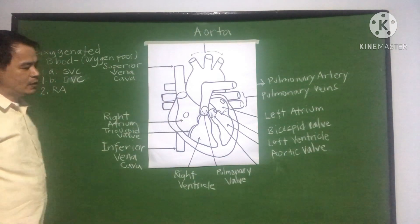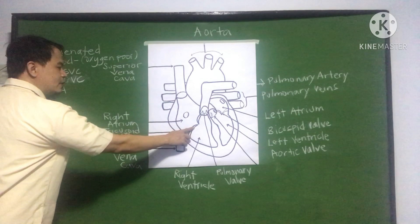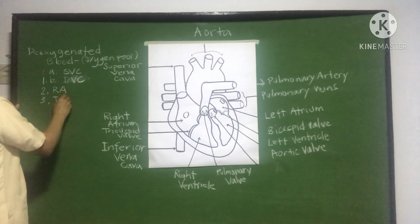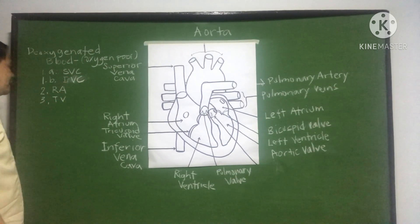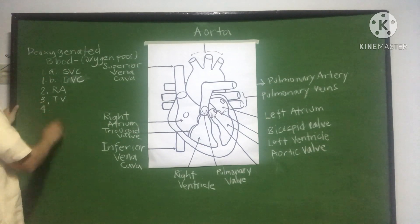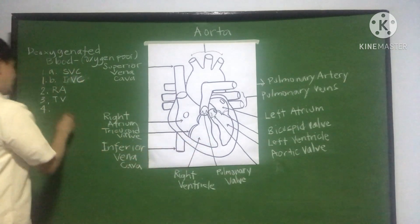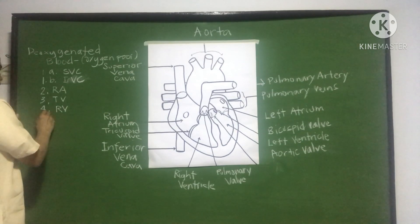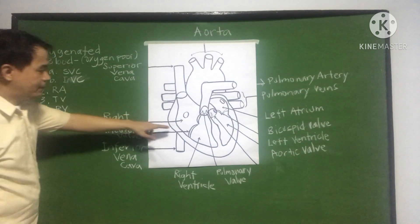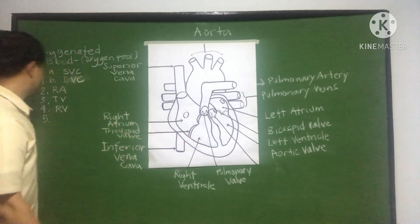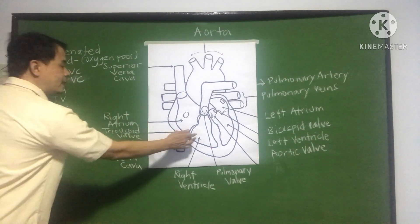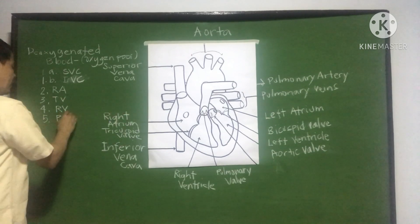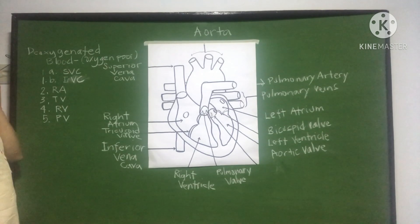From the right atrium, the blood is pushed through the valve. Number 3 is called the tricuspid valve. And it enters number 4: the right ventricle. Next, number 5: the blood exits the right ventricle through the pulmonary valve.